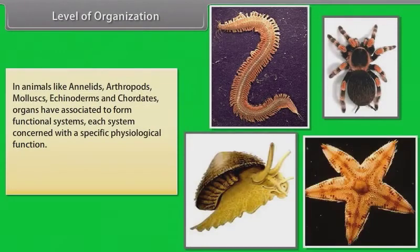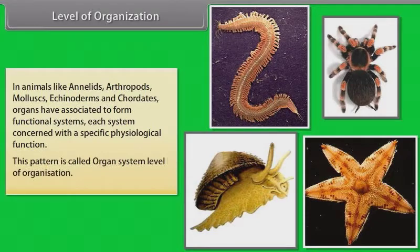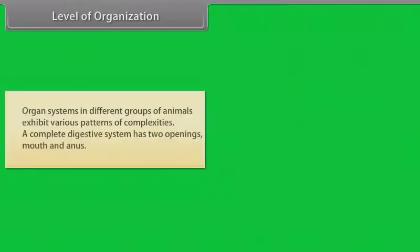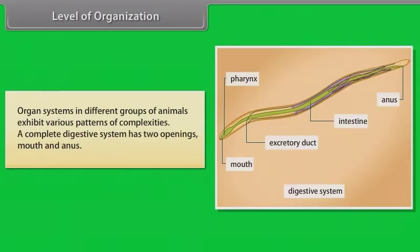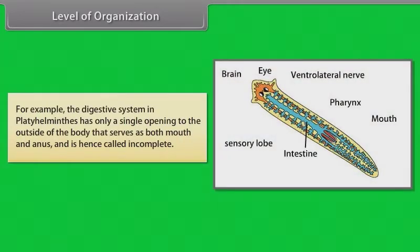In animals like annelids, arthropods, mollusks, echinoderms and chordates, organs have associated to form functional systems, each concerned with a specific physiological function — called organ system level of organization. A complete digestive system has two openings: mouth and anus. For example, the digestive system in Platyhelminthes has only a single opening that serves as both mouth and anus, and is hence called incomplete.